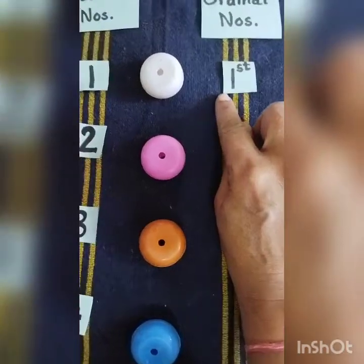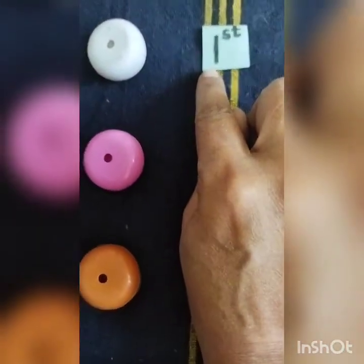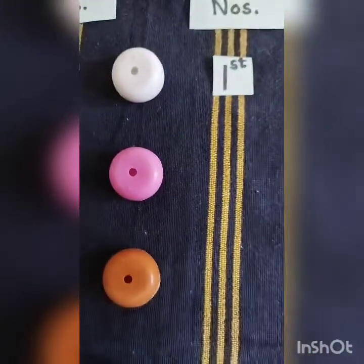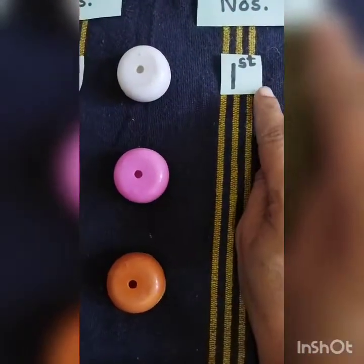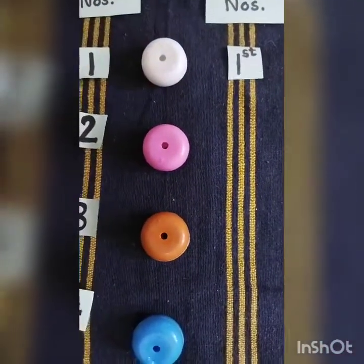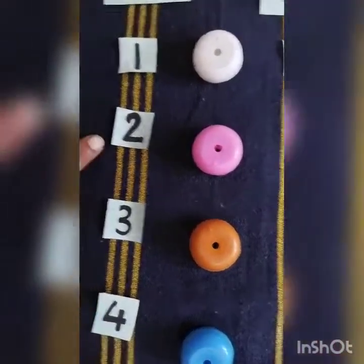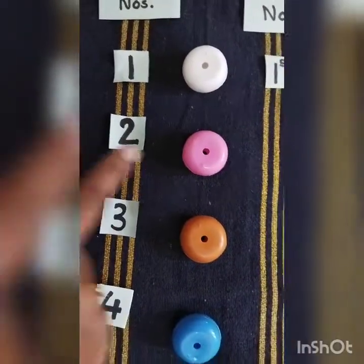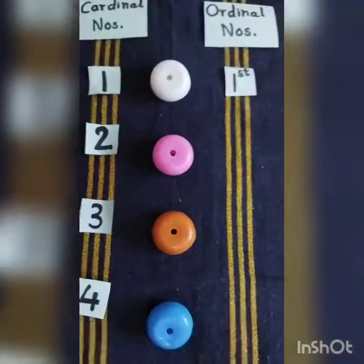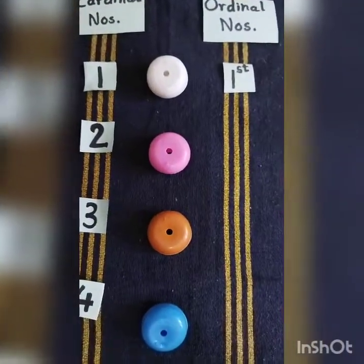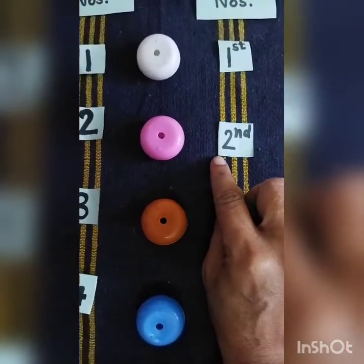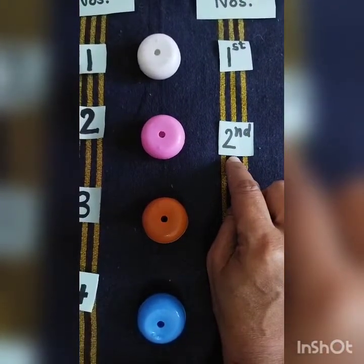It is 1st — "st" means first. Then the pink one. Here you can see number two; number two is against the pink bead. So the pink bead is in which position? It is on second position. So here you can see 2nd — "nd" means second.